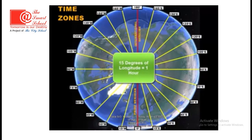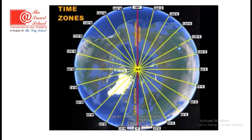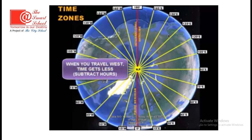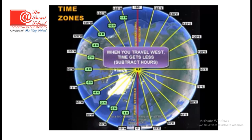Each hour is worth 15 degrees of longitude, so every single wedge on this picture is worth one hour of time. You have to remember when to add hours and when to subtract hours. Here's a simple rhyme: if you go west, time gets less. For every 15 degrees that you move westward, you lose an hour of time. From the prime meridian to 15 degrees west, I lose one hour. To 30 degrees, that's two sets of 15, so I lose two hours. From 0 to 45, that's three sets of 15, so I lose three hours.